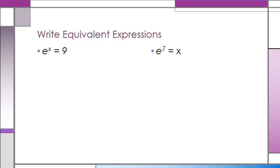Here on the left we have E raised to the power of X equals 9. If we want to write this in logarithmic form, we take the natural log of both sides of this equation. The natural log and natural base E cancel, and we're left with X equals the natural log of 9.